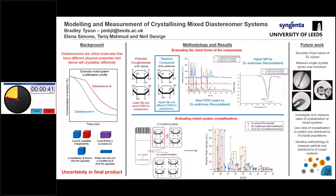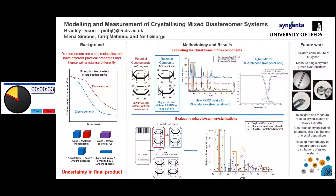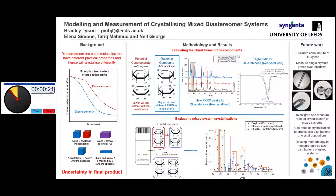Future work entails elucidating the chiral nature of our DR xylose, as we're not sure what it is — it might be a potential conglomerate. We'll also be measuring these nice single crystals grown over the lockdown period while the lab wasn't disturbed. This will help us towards the later stages of the project where we'll investigate and measure rates of crystallization of these mixed systems, use those rates to predict crystal size distributions of different populations, and develop a methodology to measure particle size of the mixed systems experimentally.